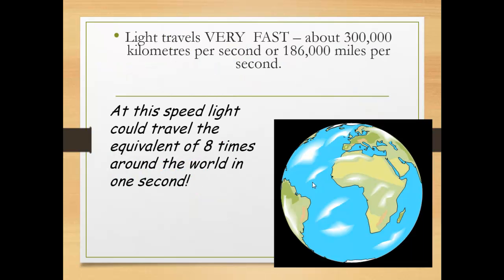Light travels very fast, about 300,000 km per second, or 186,000 miles per second. At this speed, light could travel the equivalent of 8 times around the world in 1 second.